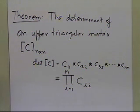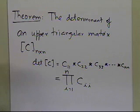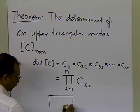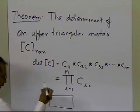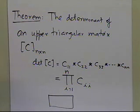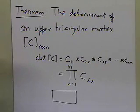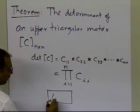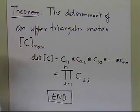These two theorems of the determinant of a matrix are used together to find the determinant of any matrix. This is useful for things you need to do when finding a determinant, such as figuring out whether a particular matrix is invertible or whether a particular matrix is singular. And that's the end of this segment.